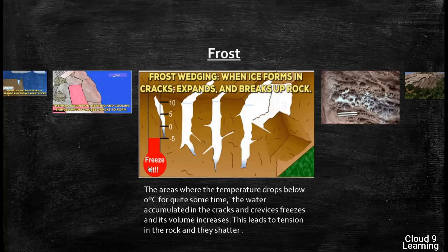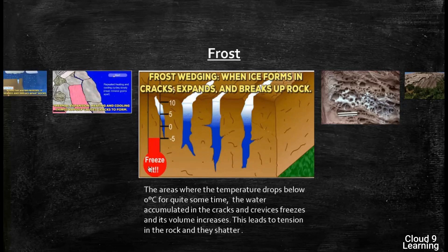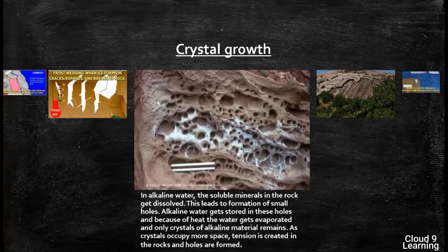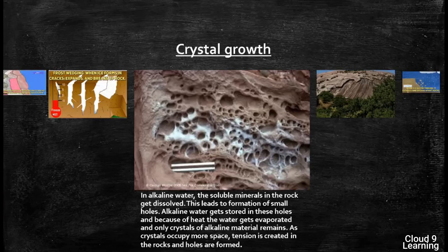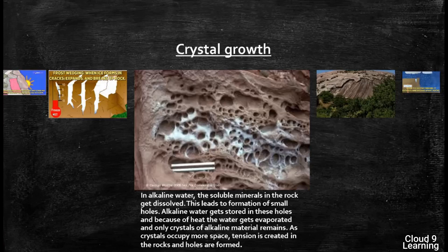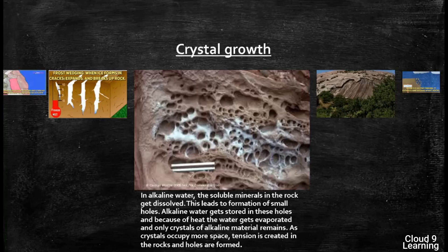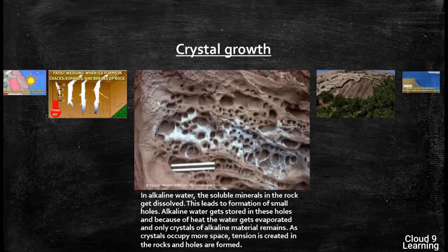The next one is crystal growth. In rocky coasts, waves hit the sea cliff and the water is alkaline. In this alkaline water, the soluble minerals in the rocks get dissolved, leading to formation of small holes. Alkaline water gets stored in these holes, and because of heat the water gets evaporated and only crystals of alkaline material remain. As crystals occupy more space, tension is created in the rocks and holes are formed — you can see in this picture the holes formed because of crystal growth, which look like a honeycomb.